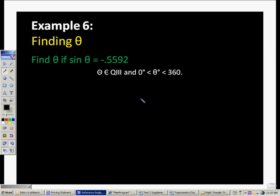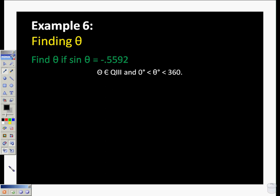Alright, we're going to be working with finding reference angles using inverse trig ratios. So if we look at what we've already got, they've given us the fact that the sine of theta is equal to negative 0.5592.